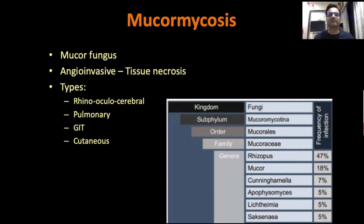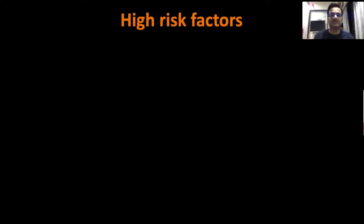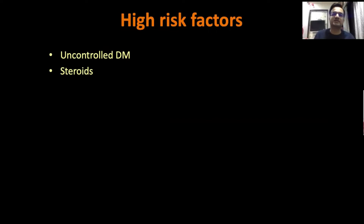The most common type we see is rhinooculocerebral, which we have already seen so many of in the last couple of weeks. But remember, pulmonary is also very common — do keep an alert for pulmonary mucormycosis as well. There can also be GIT and cutaneous forms. The top risk factors, as we all know, are uncontrolled diabetes mellitus and steroids — number one and number two.